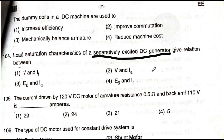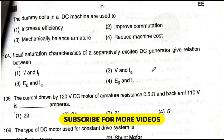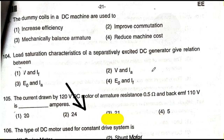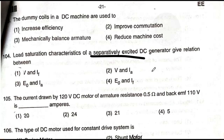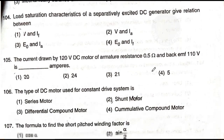Question number 104: The load saturation characteristics of a separately excited DC generator give the relation between — option one: voltage and IF; option two: voltage and IA; option three: E0 and IA; option four: E0 and IF. The answer is option one — voltage and IF. This is the saturation characteristic of the separately excited DC generator.